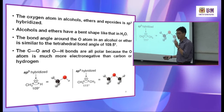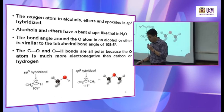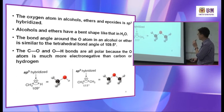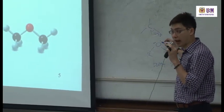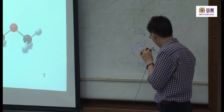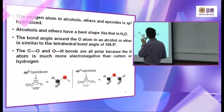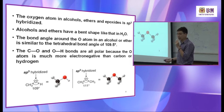The bond angle around the oxygen atoms in an alcohol or ether is similar to the tetrahedral bond angle of 109.5 degrees — in this case it's about 109, very close to the tetrahedral. Water is about 107 or 108 degrees, so only one or two degrees different. The C-O and O-H bonds are polar because oxygen is very electronegative, making the C-O bond and the O-H bond polar.